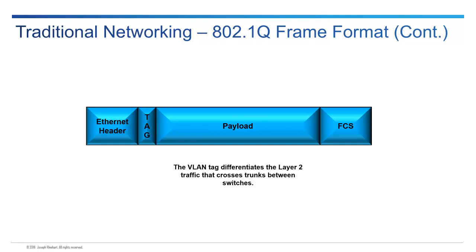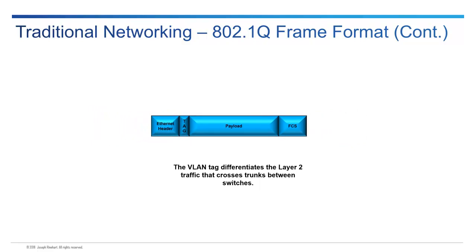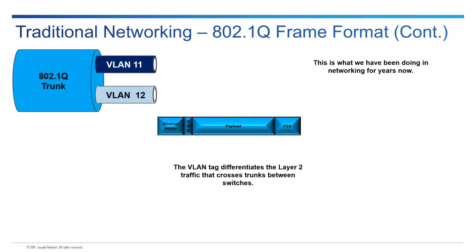This is essentially what's differentiating Layer 2 traffic. The bottom line is we've been doing this for years — nothing new. You have multiple VLANs going across a trunk: in this example, VLAN 11 and VLAN 12, tagged with different values so that switches can distinguish which VLAN each frame is associated with. Pretty simple and straightforward, nothing overly complex.